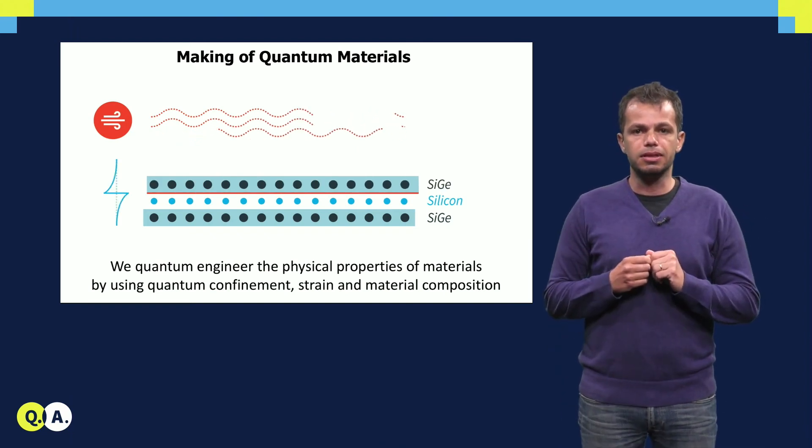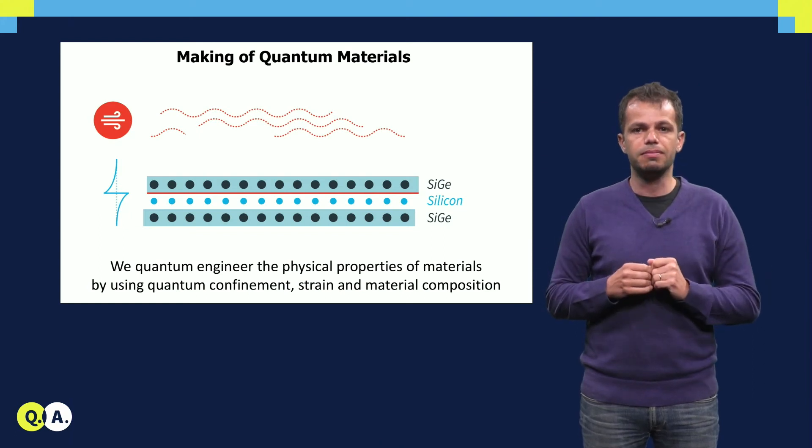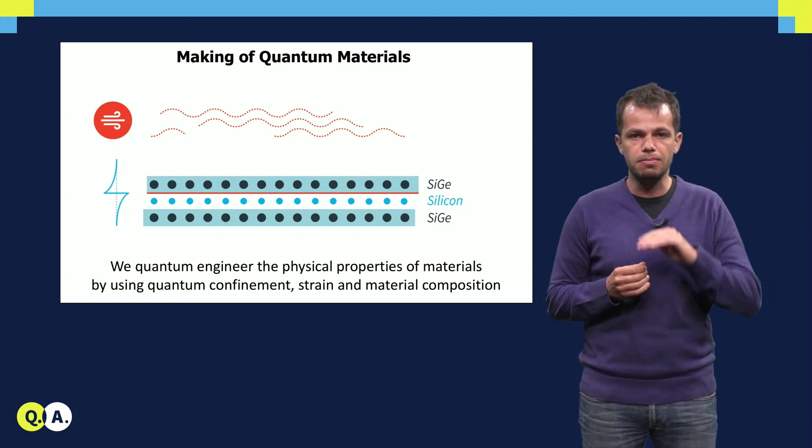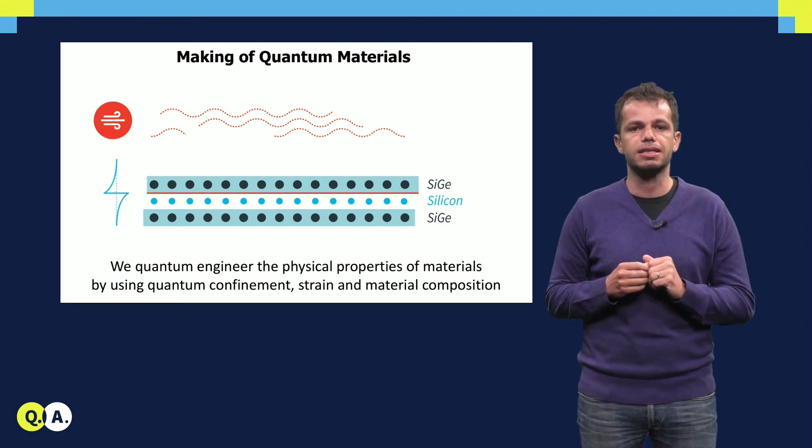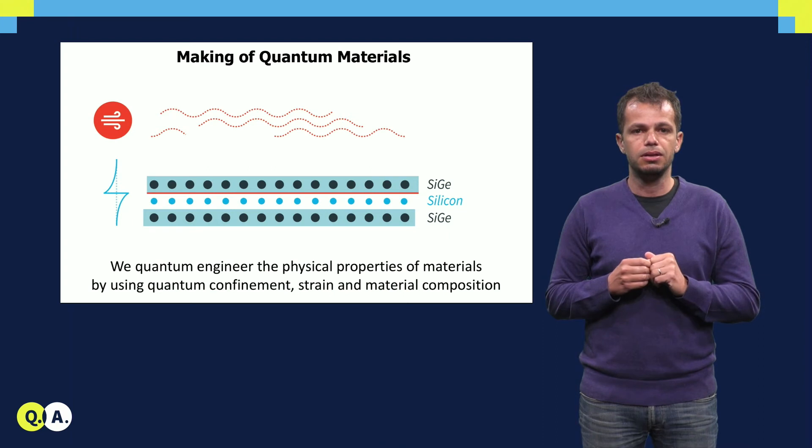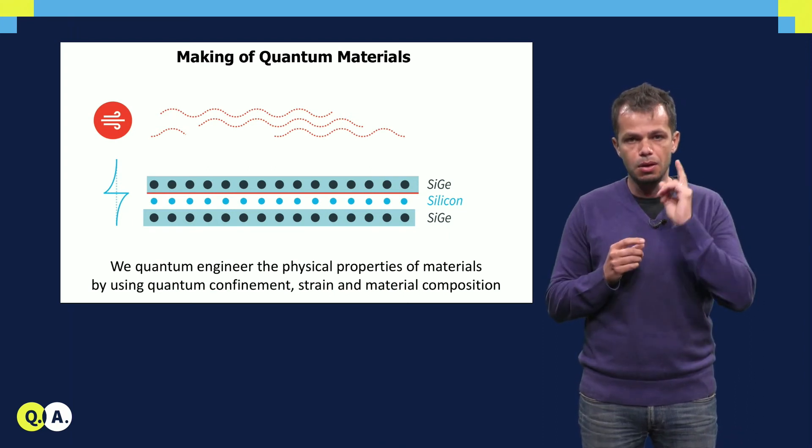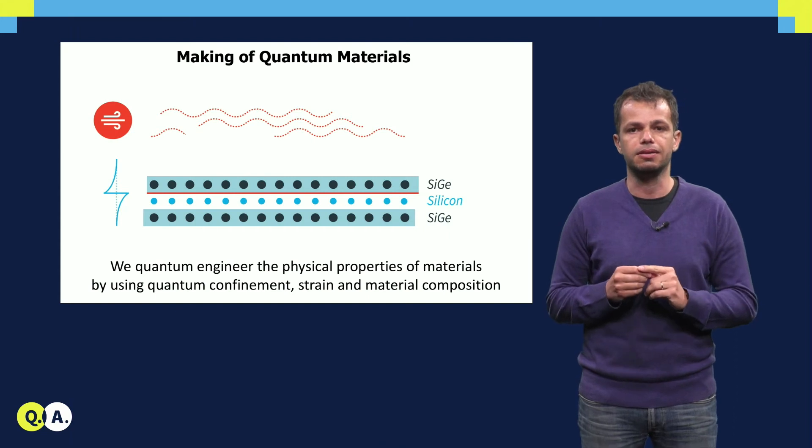As a result, the electronic properties of such heterostructure, which is made of different materials, make it possible to form a two-dimensional electron gas at the interface between silicon and silicon germanium. Qubits can then be made by isolating by electric fields one electron spin at that interface.